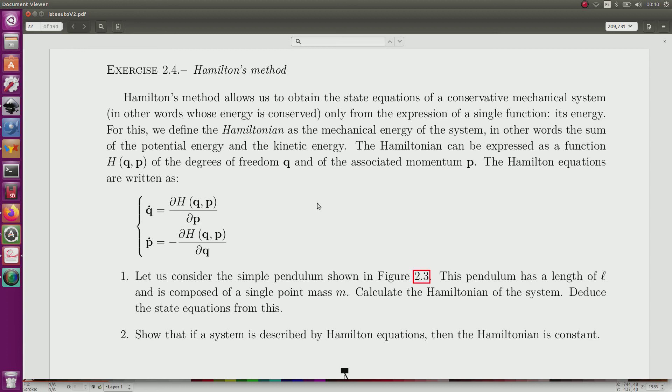The Hamiltonian is the sum of the potential energy and kinetic energy. This Hamiltonian should be expressed with respect to q, the degrees of freedom, and p, the momentum that is related to the speed. If we get this expression, we directly obtain the state equation of the system.